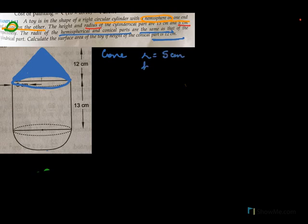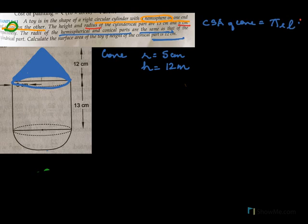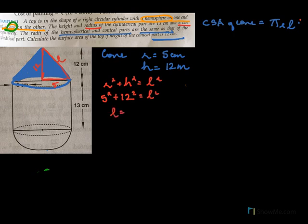Starting with the cone: radius r = 5 cm, height h = 12 cm. The CSA of the cone is πrl, so we need the slant height l. Using Pythagoras: r² + h² = l², so 5² + 12² = l².